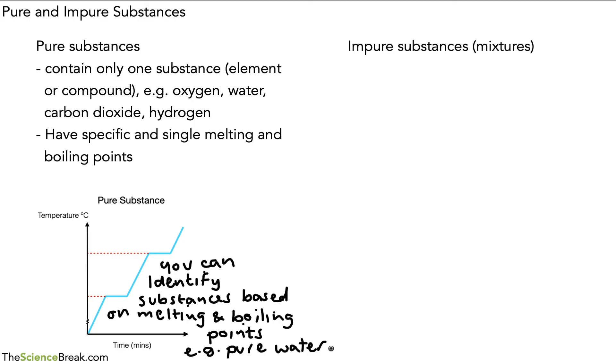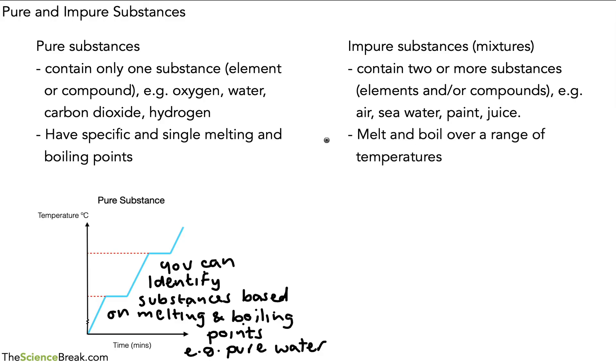For our impure substances, well these are when we have mixtures, so we could describe an impure substance as a mixture, but they contain two or more substances, i.e. elements and/or compounds. For example, air, seawater, paint, or juice, these are all mixtures, and they melt and boil over a range of temperatures and not at one specific temperature. And we had a graph that showed that that looked a bit like this. So there's our graph for melting and boiling of impure substances.